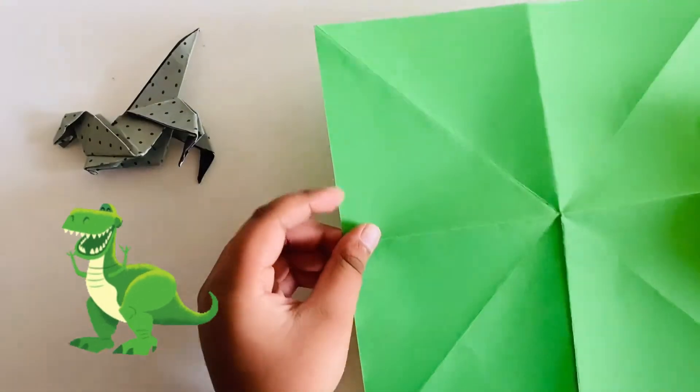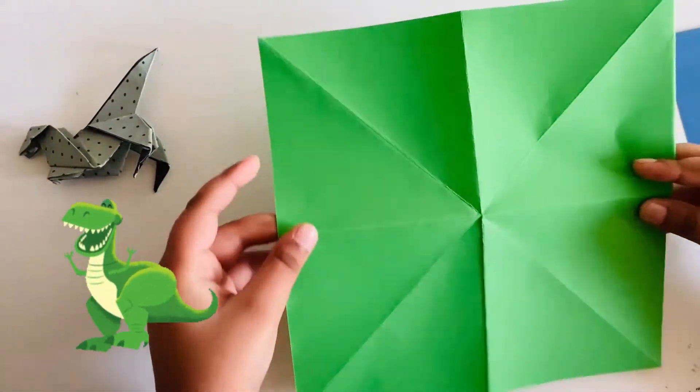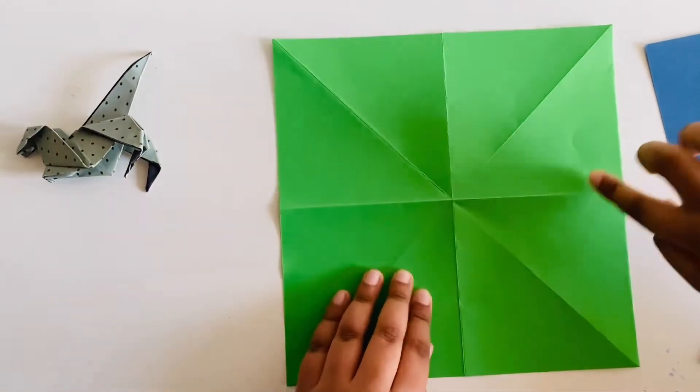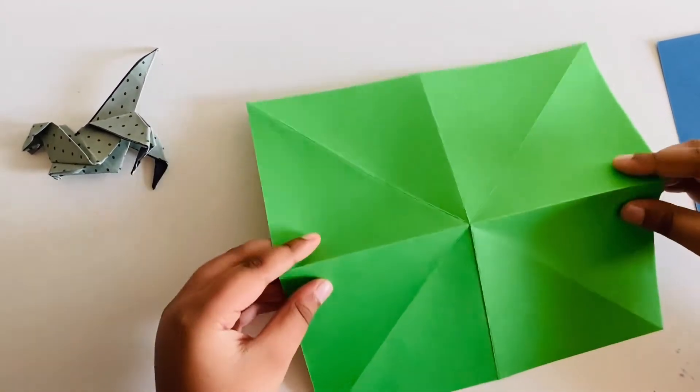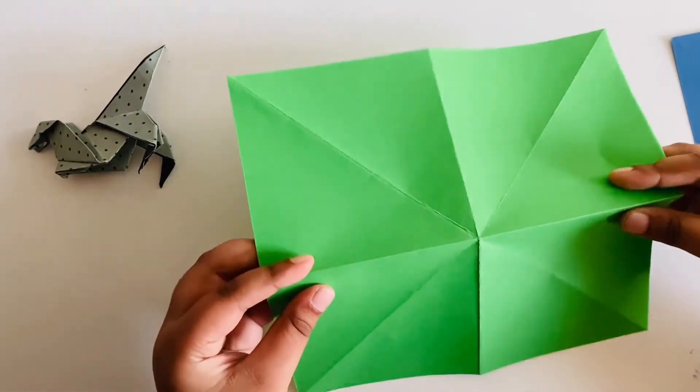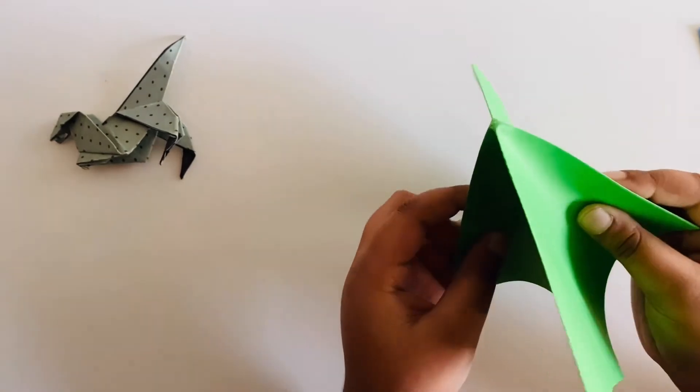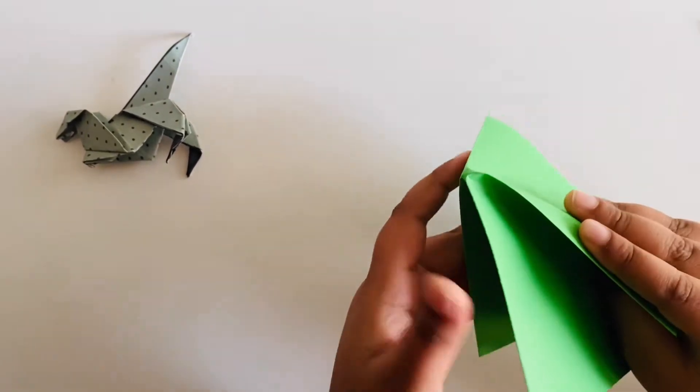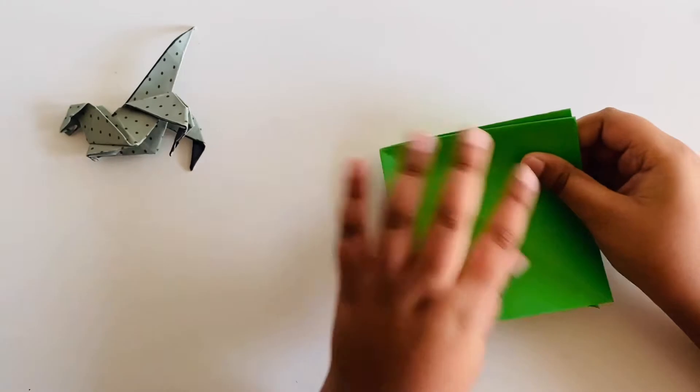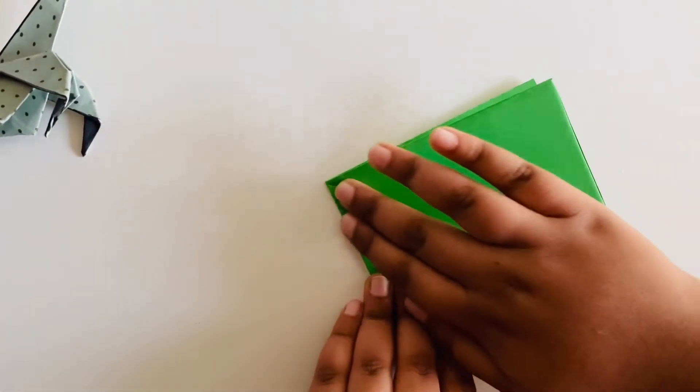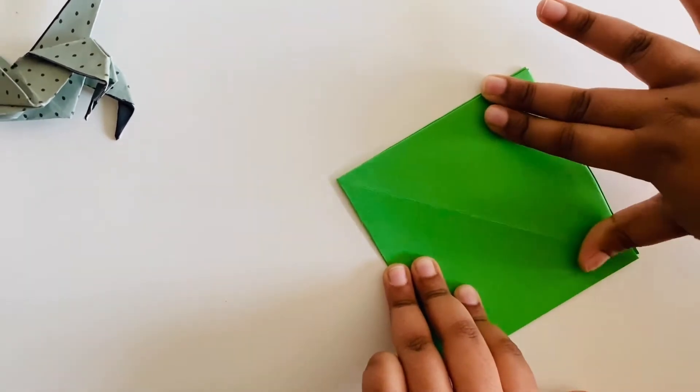Next after you've done this you might see a plus right over there. And from that part you need to take your two corners and then fold it like that. And then do it like this.